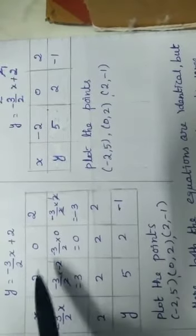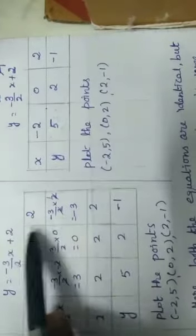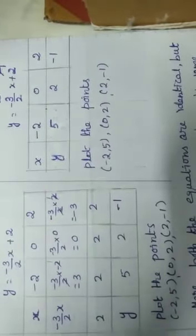So now we will plot the points. Plot the points: minus 2, 5; 0, 2; and 2, minus 1. Okay, first equation over.